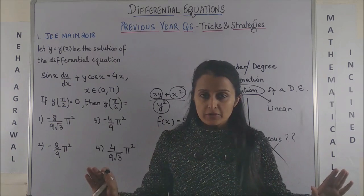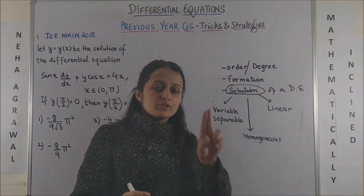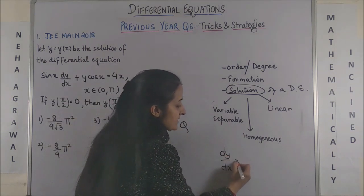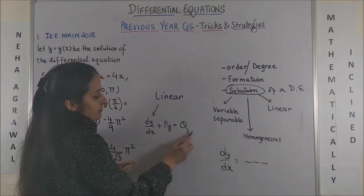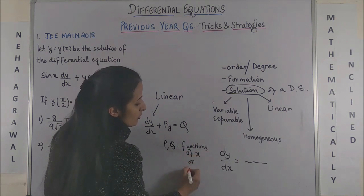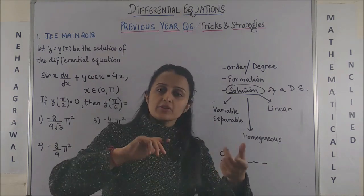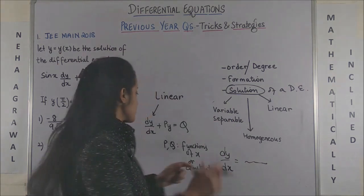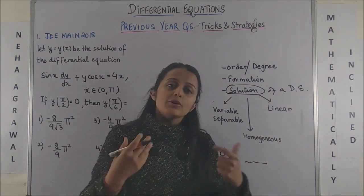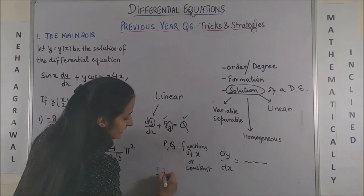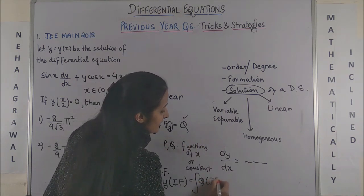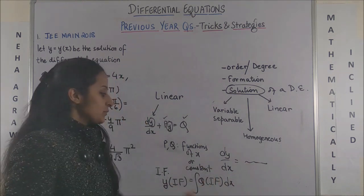Your linear differential equation is of two types. The first looks like: dy/dx plus Py equals Q, where P and Q are either functions of x or constant terms — maybe one is a function of x and the other is a constant, maybe both are constants, maybe both are functions of x. You would find the integrating factor e raised to the power of the integral of P dx, and then directly write the answer: y times integrating factor equals integral of Q times integrating factor dx.